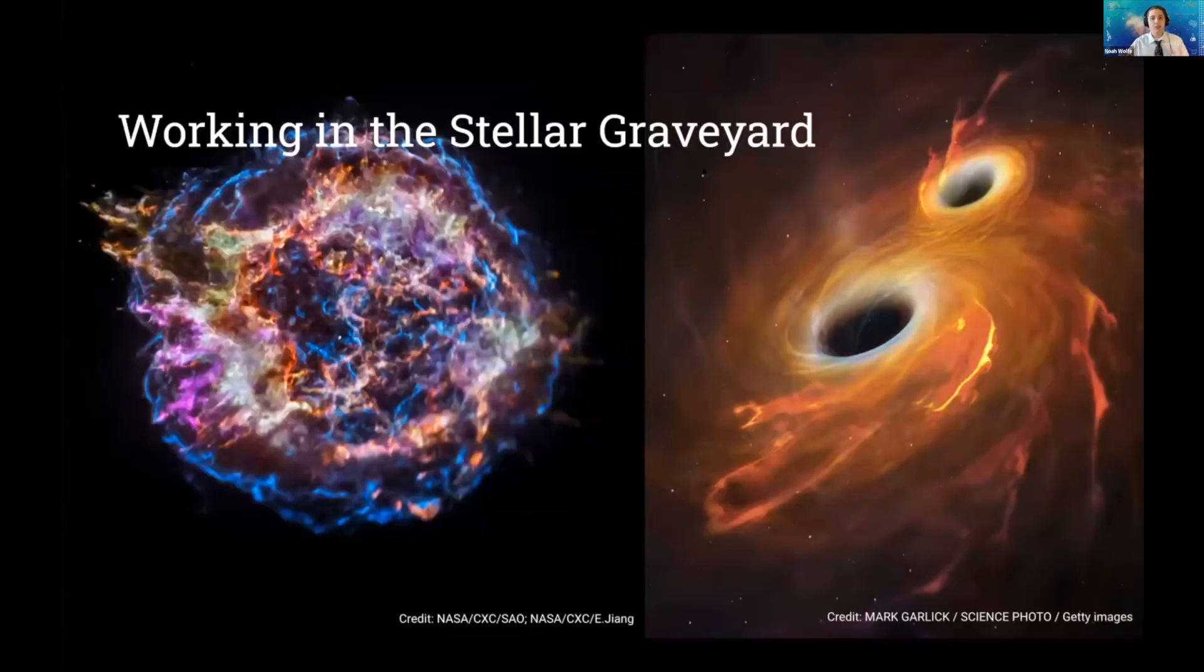So the stellar graveyard isn't as spooky as you might think. It's the domain of the deaths of stars, also called supernovae, and their remnants in the form of things like neutron stars and black holes. Maybe you've heard of these before, but if you haven't, neutron stars are the super dense remains of a star after it's died, made up of all kinds of nuclear weirdness. And black holes are their even denser cousins from which no light can escape.